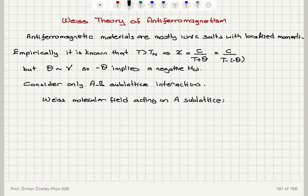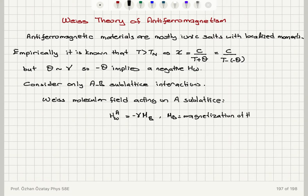The Weiss molecular field acting on sub-lattice A is h_wA = minus gamma times the magnetization of the B sub-lattice, M_B. Similarly, the Weiss molecular field acting on sub-lattice B is h_wB = minus gamma times the magnetization of the A sub-lattice, M_A.